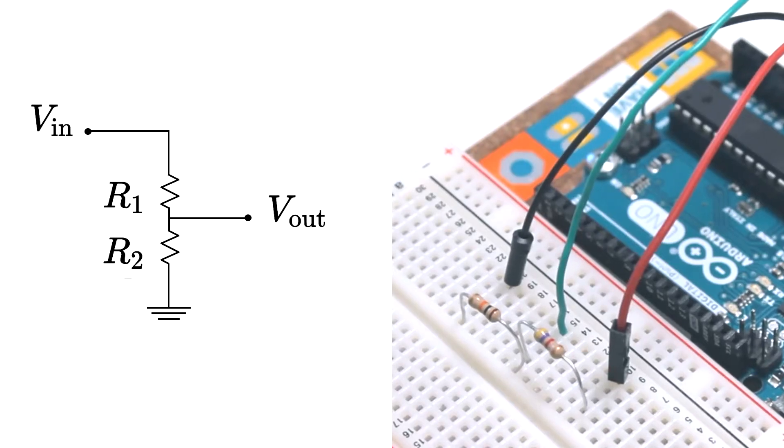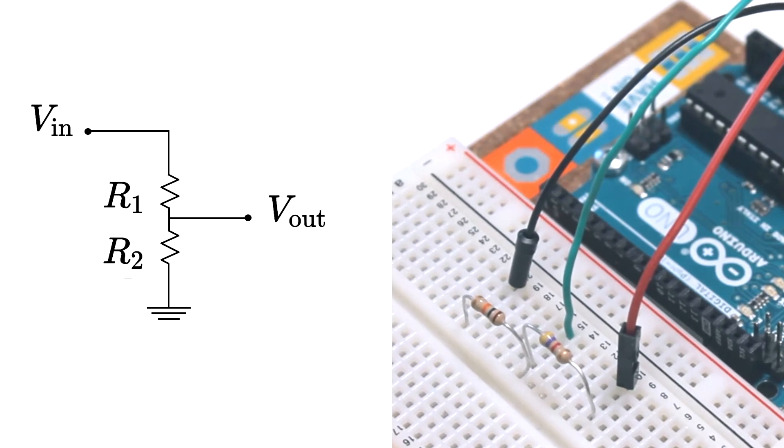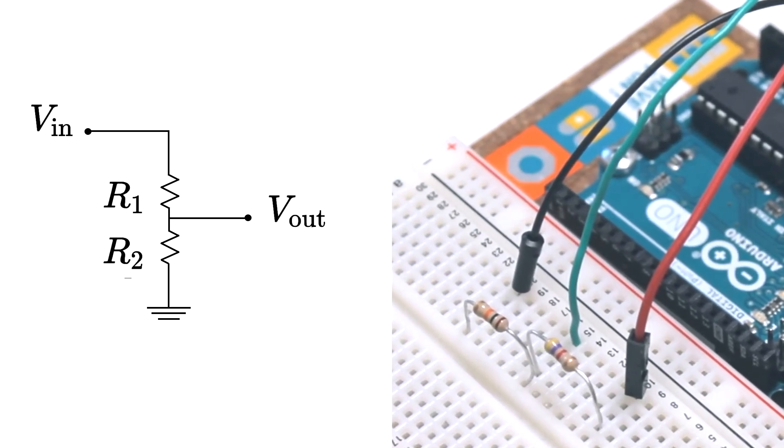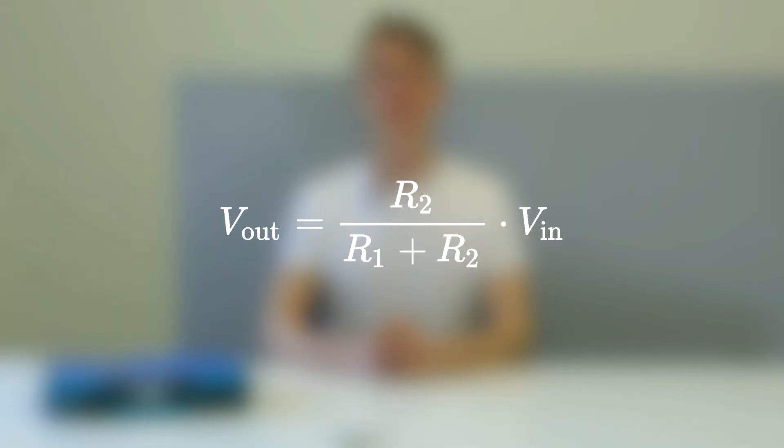A voltage divider is a circuit using two resistors to convert a larger voltage to a smaller one. The relation of the resistors determines the output voltage of the divider.